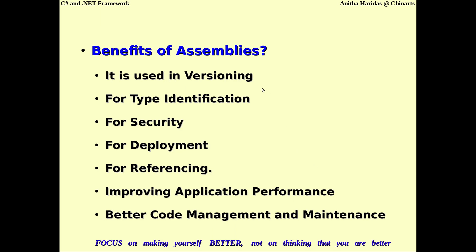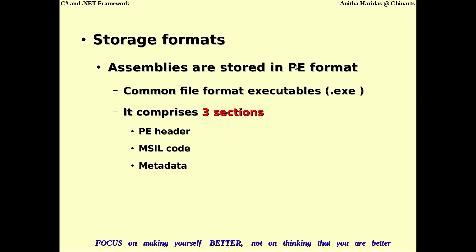Assemblies are generally stored in the portable executable format — also called process executable format. The common file format extension is .exe. It contains three sections: the process executable header, the intermediate language code, and the type metadata. So any .exe file will contain these three things: the executable header, the object code or platform-independent code, and all the metadata.